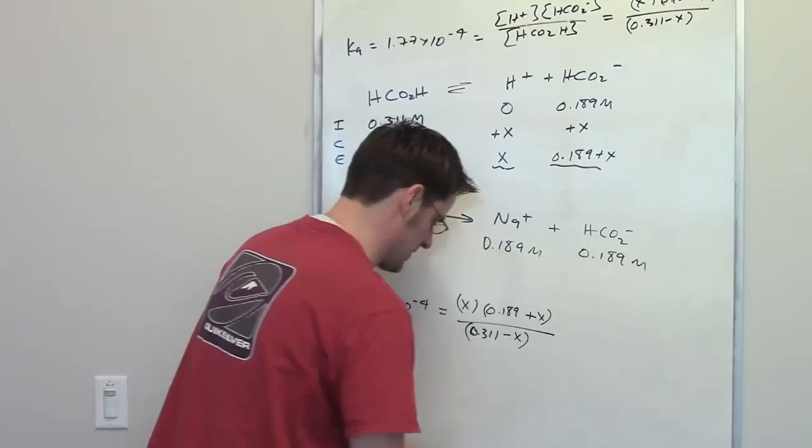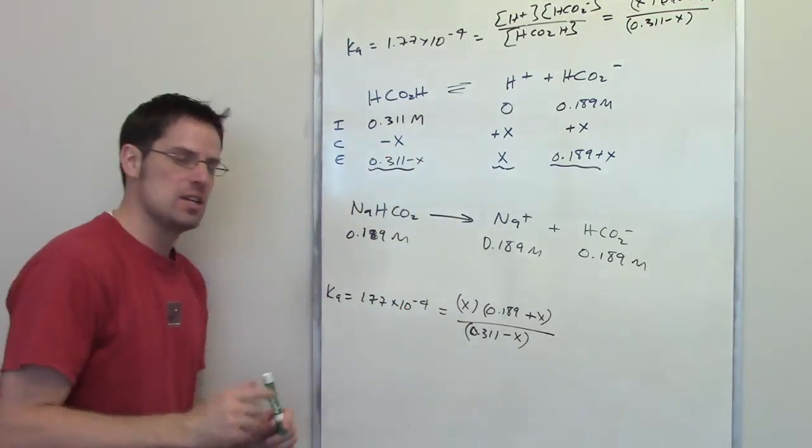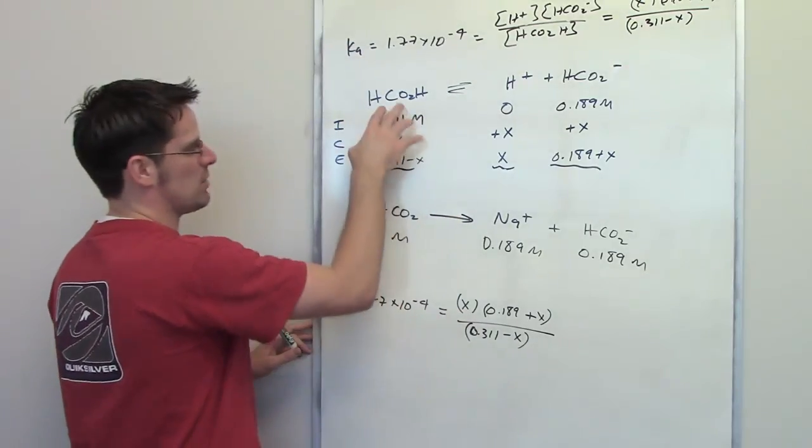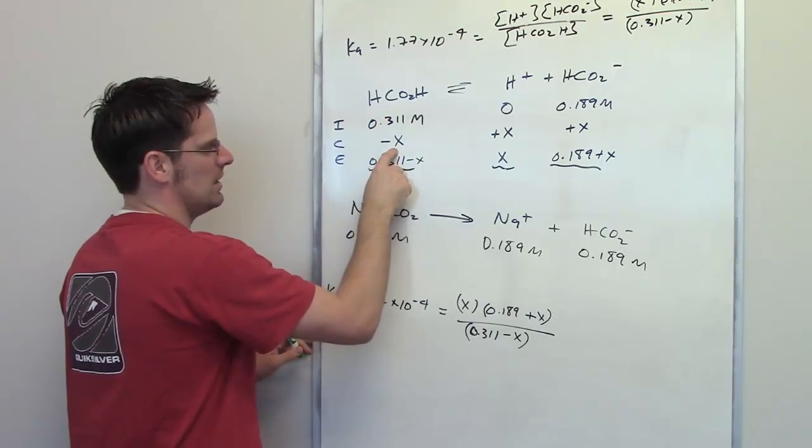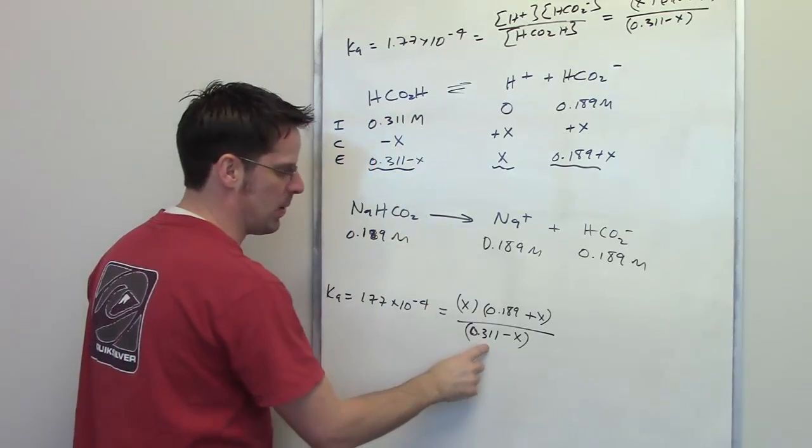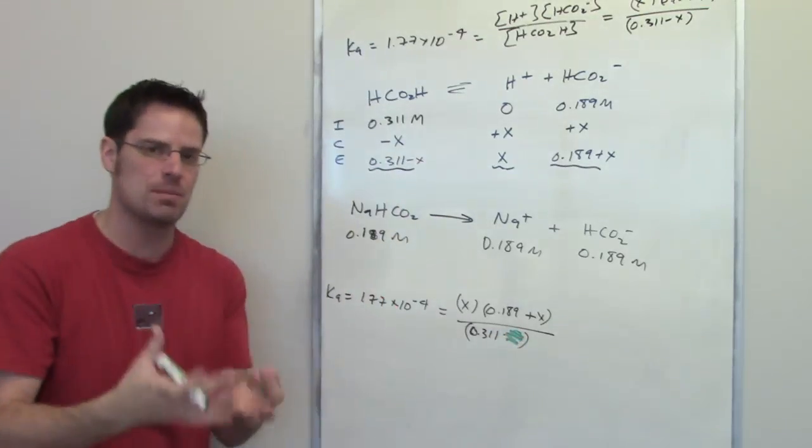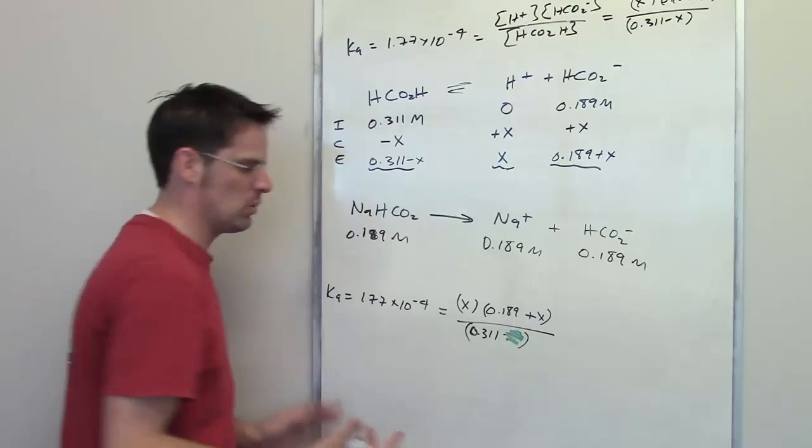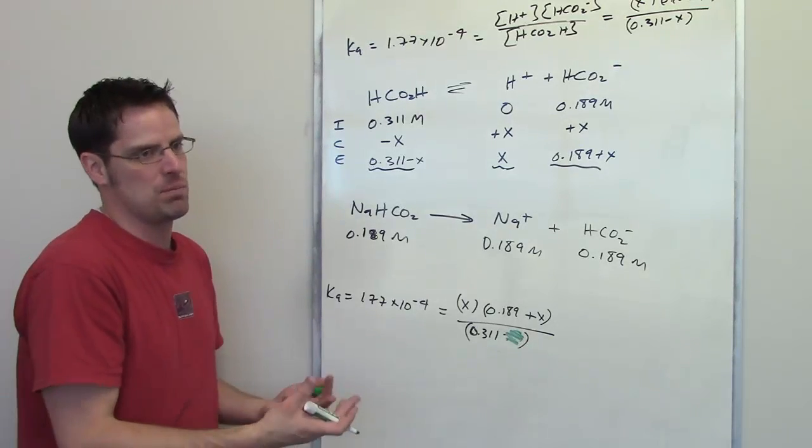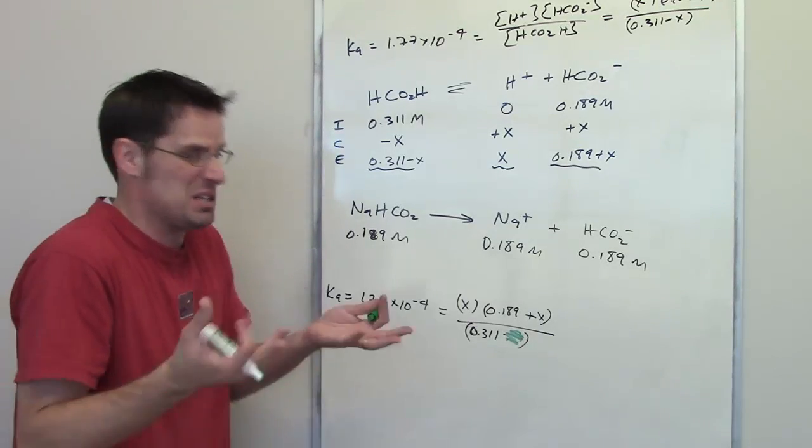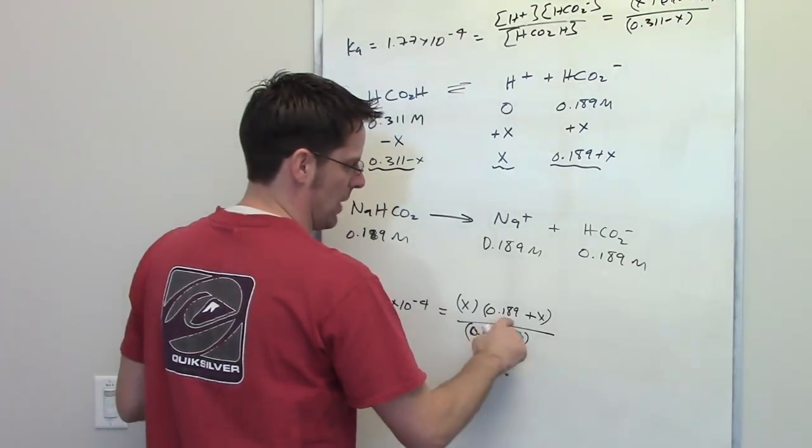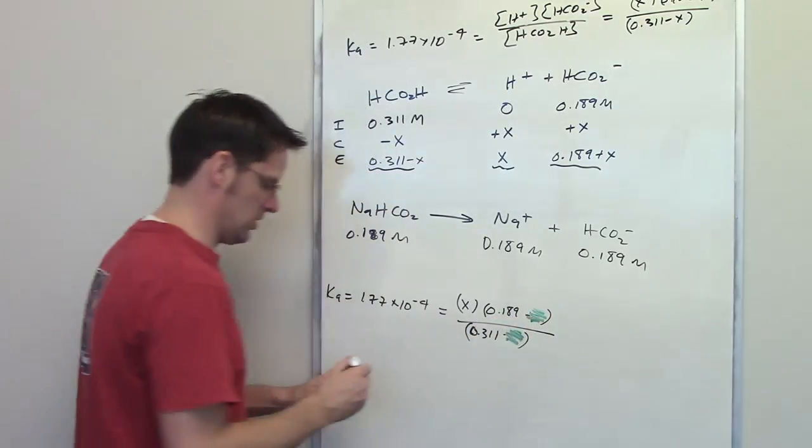Now, there's a trick, which I showed you in a previous example as well, and that is this. These X values, because you're dealing with a weak acid, it's going to be so small compared to 0.311 that you can basically throw it out. If you actually had the number X, threw it in there and subtracted it from 0.311, it would be like, the answer would be so close to 0.311 that you can just ignore it. Same thing with the 0.189. You can just throw out this X term. So, that simplifies things a little bit.